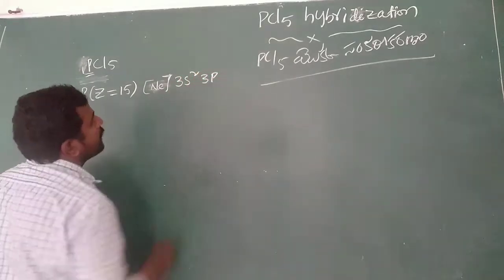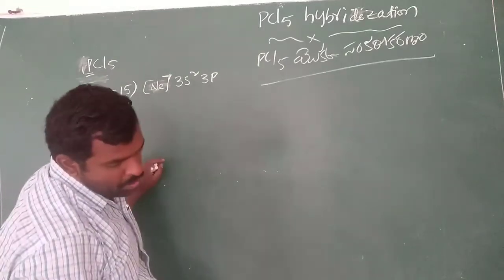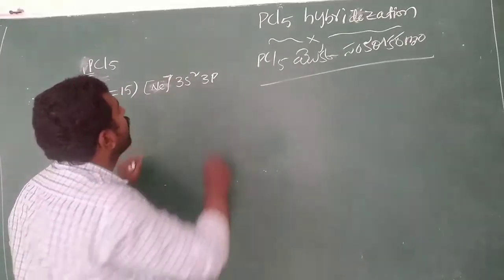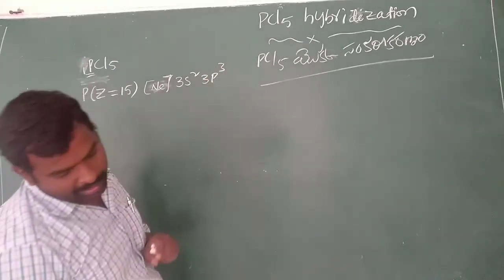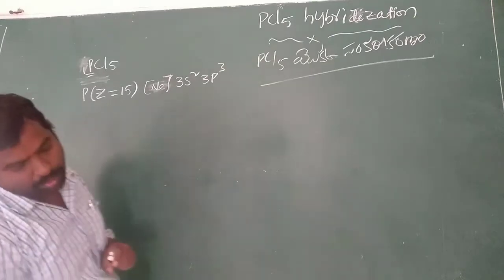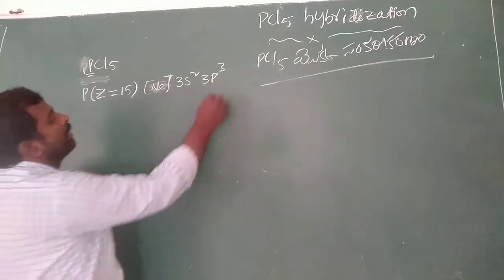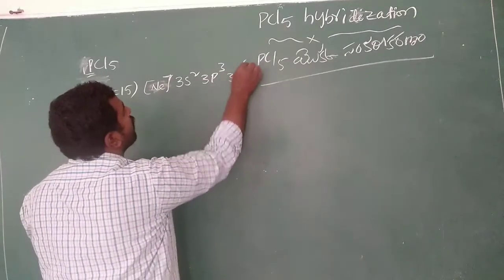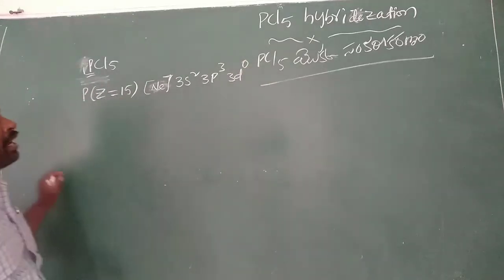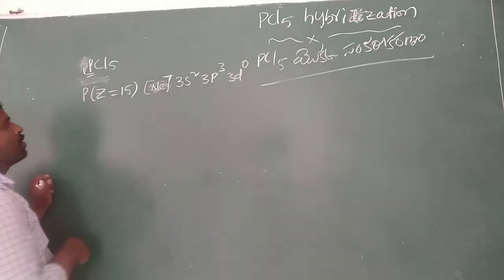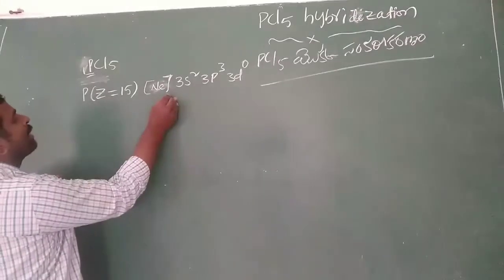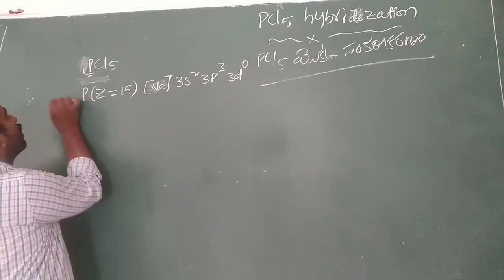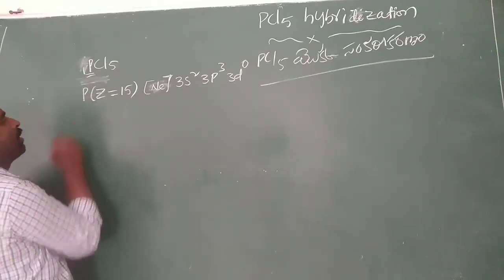The ground state electron configuration of phosphorus is 3s², 3p³, and 3d⁰. The 3d orbitals are empty at the ground state electron configuration.